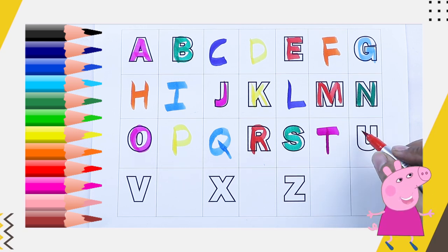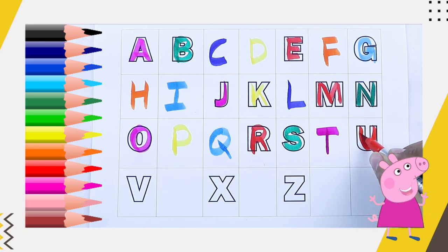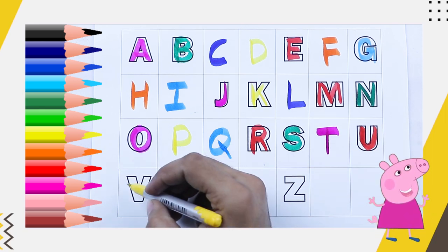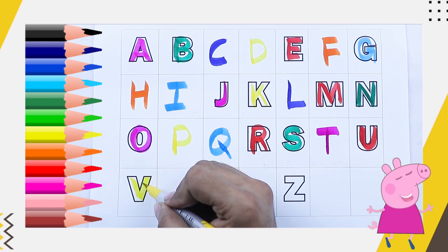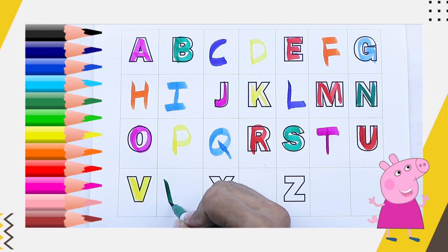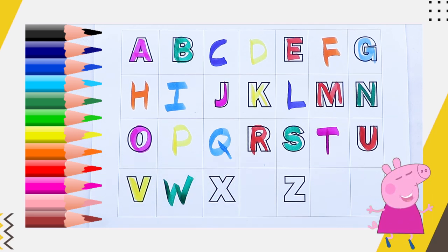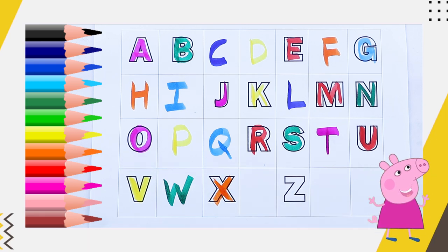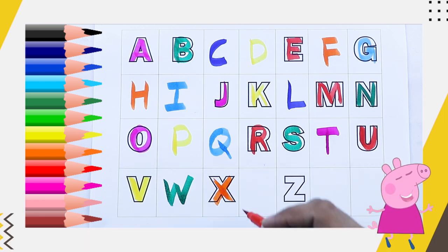What is the next? U, what next? U, for umbrella, U. V, yellow color, V, for wand. What is the next? W, green color, W, W for watch. What next? X, orange color, X, X for X must be.